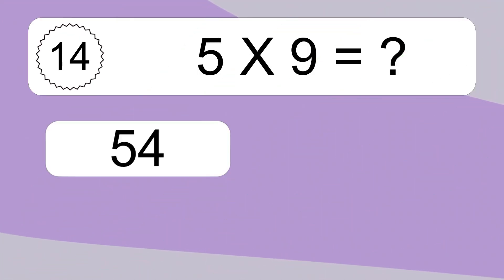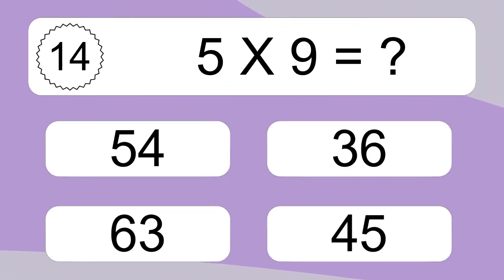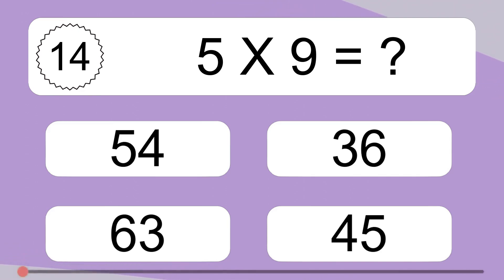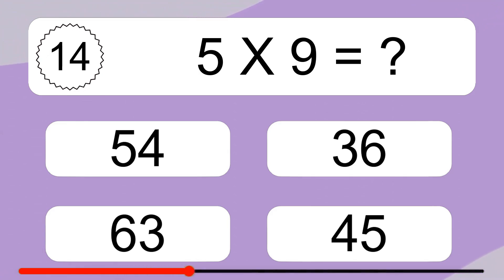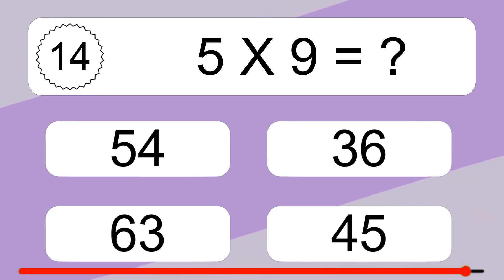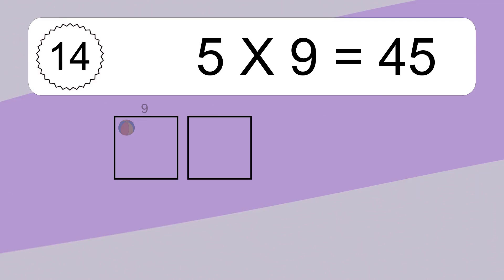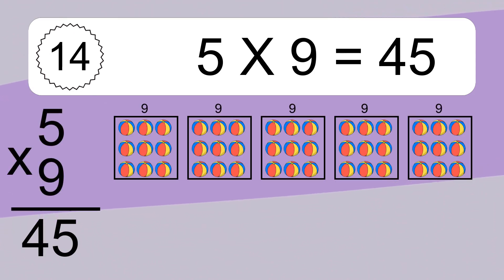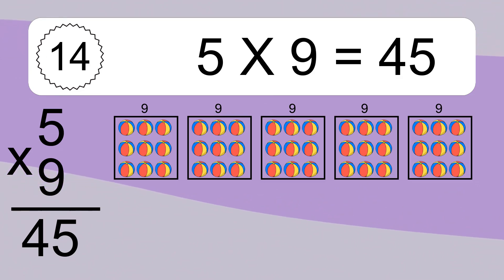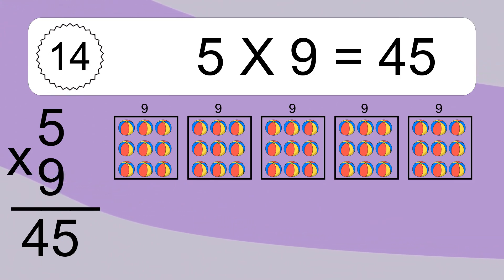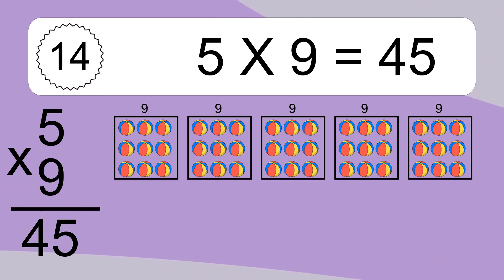5 times 9 equals what? 5 times 9 equals 45. We have 5 boxes, and each box has 9 colorful balls inside. If you count all the balls in all the boxes together, you will have 5 times 9 balls. This equals 45 balls.